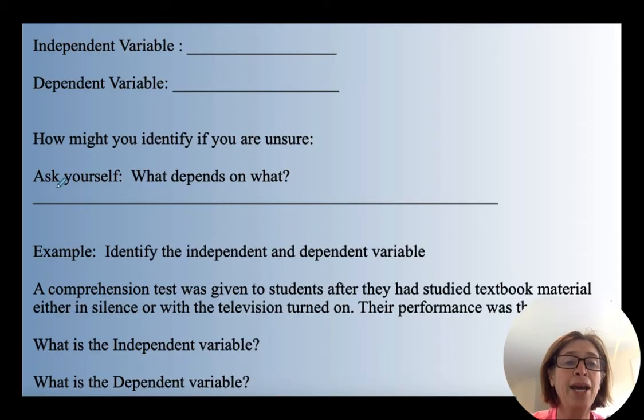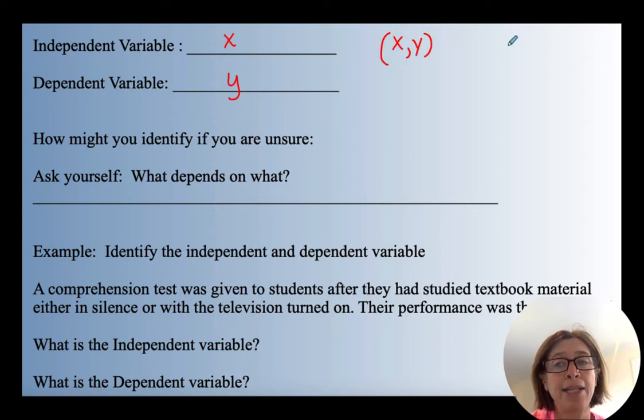Alright, so we have to make sure that we understand a couple things about these input and output values. The independent variable is x, and the dependent variable is y. Now we normally write it x comma y when we're talking about an ordered pair, but I want to remind you that sometimes you'll see it with other variables. It's always alphabetical order. A is going to be the corresponding x, B is going to be the corresponding y.